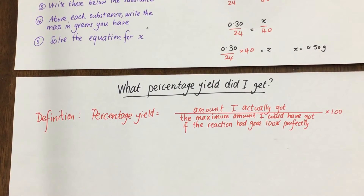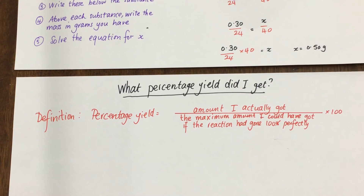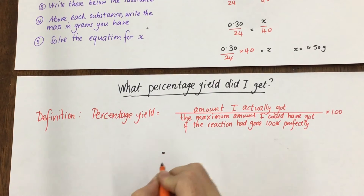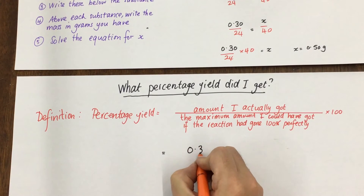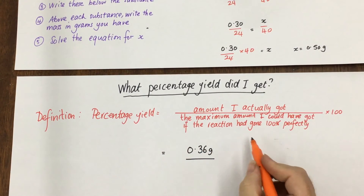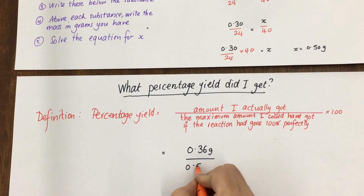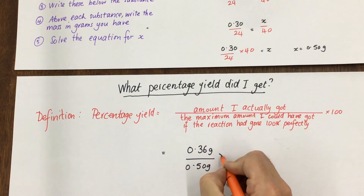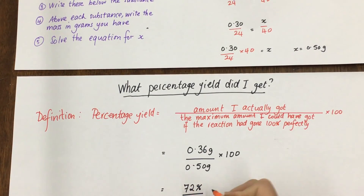Now that we know I had 0.36 grams of magnesium oxide, and we know from the calculation we've just done that I could have got 0.50 grams, we can work out the percentage yield. The amount I actually got was 0.36 grams, divided by the maximum of 0.50 grams, times 100. Put that in the calculator and the percentage yield for the reaction is 72%.